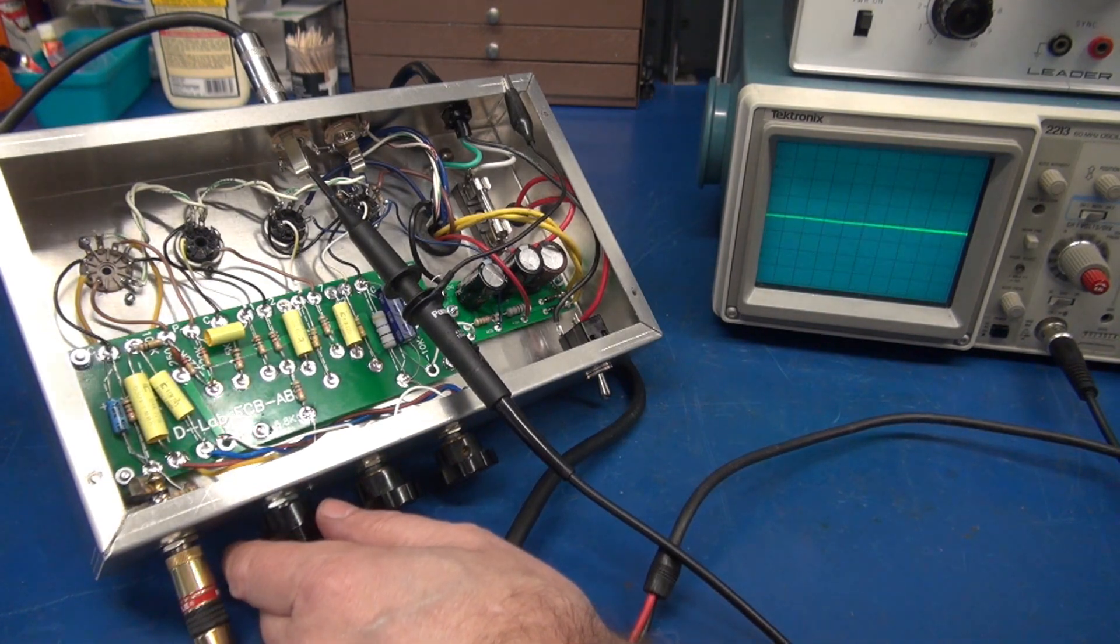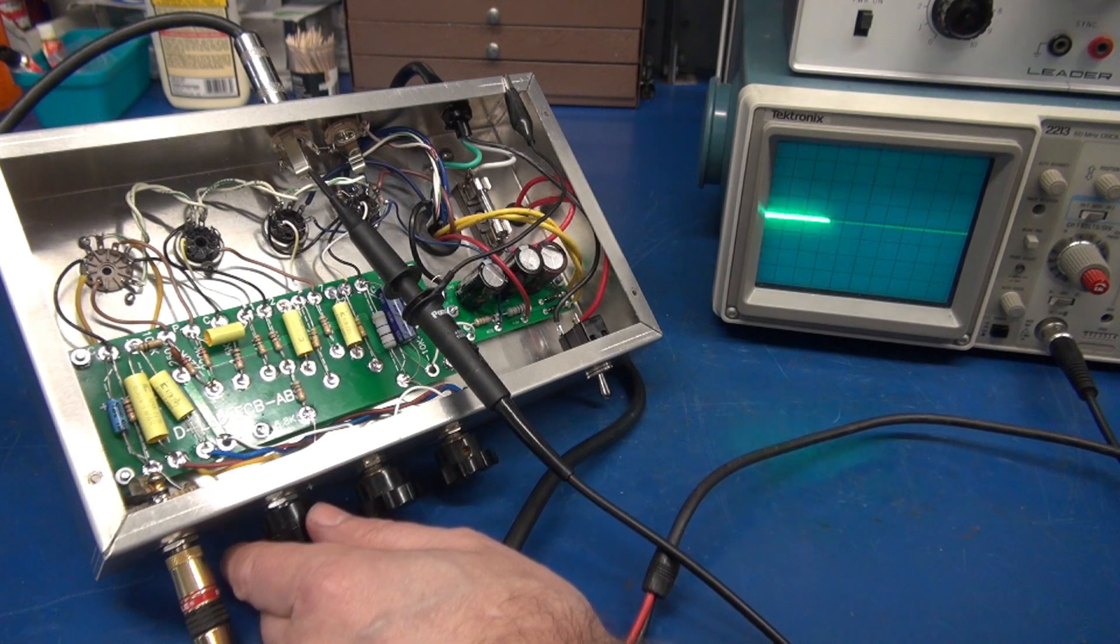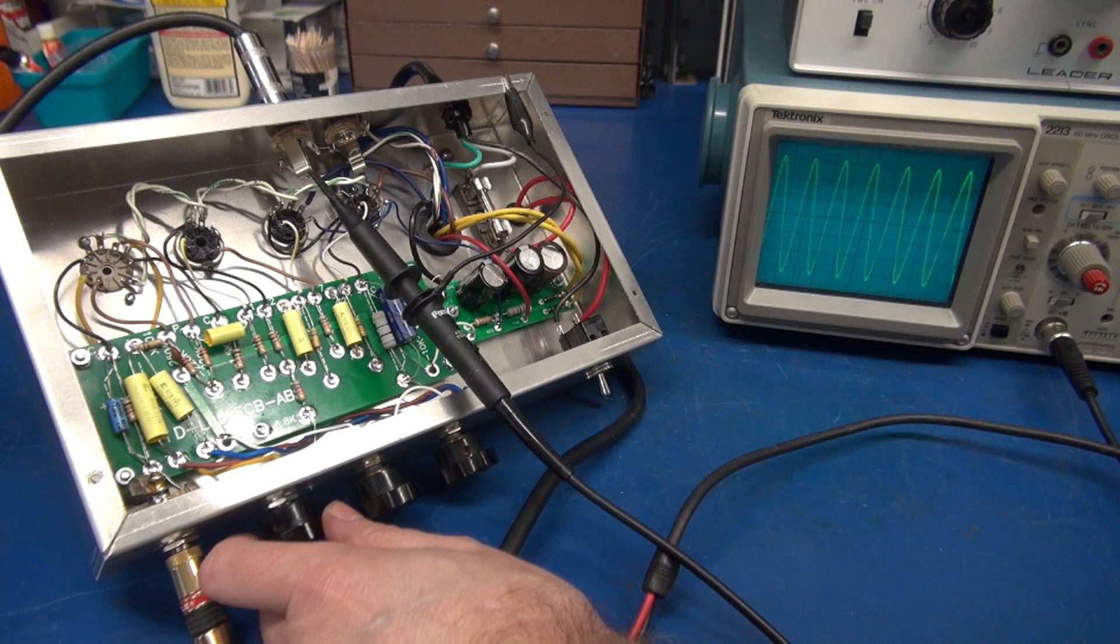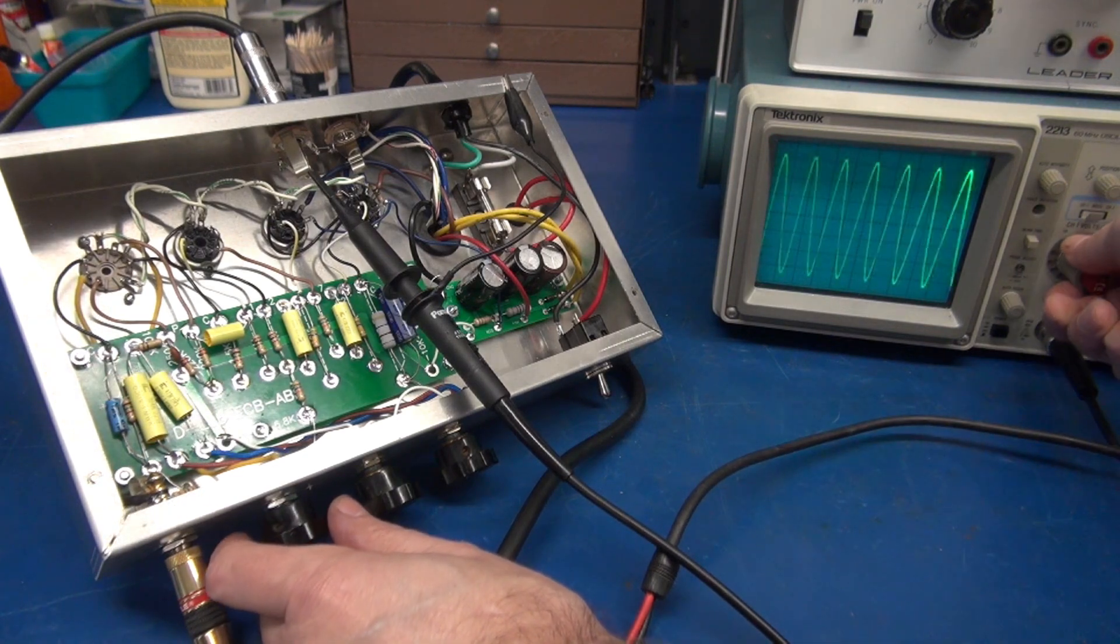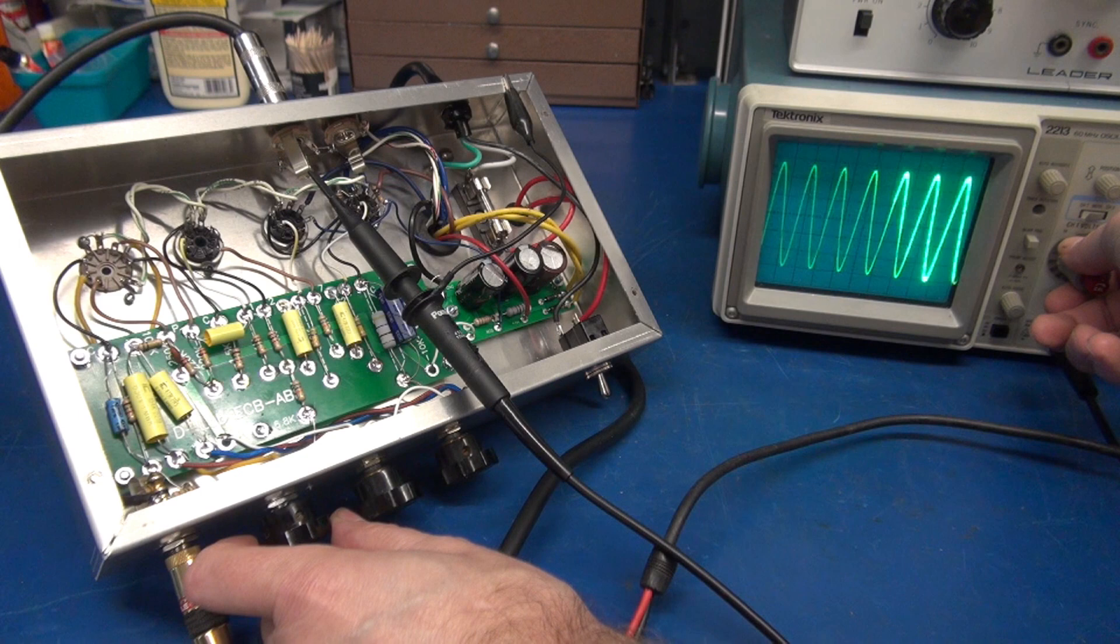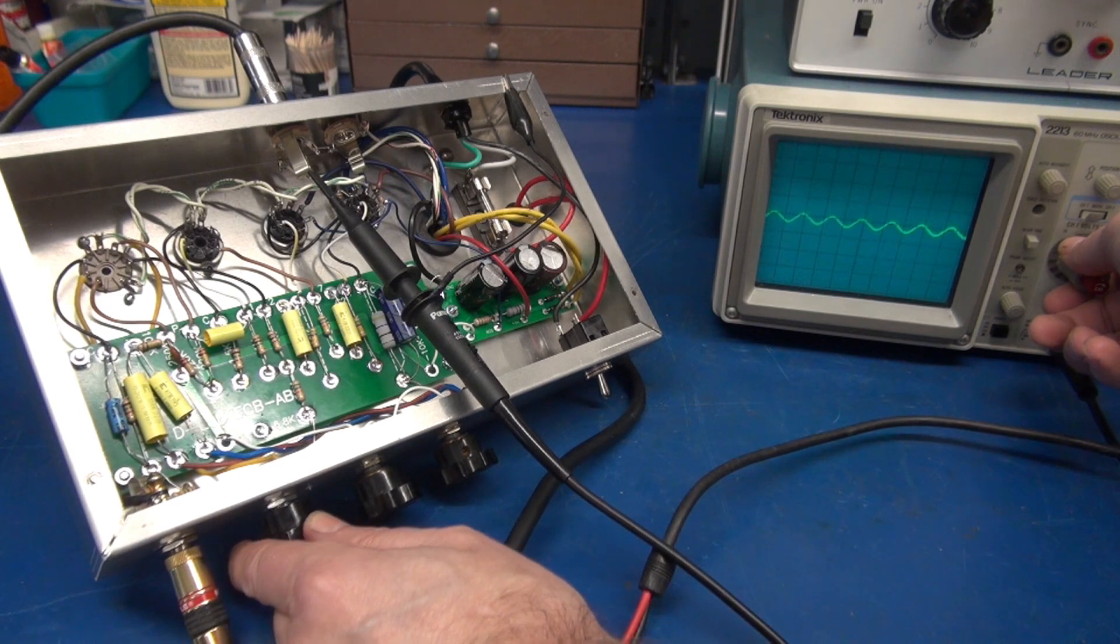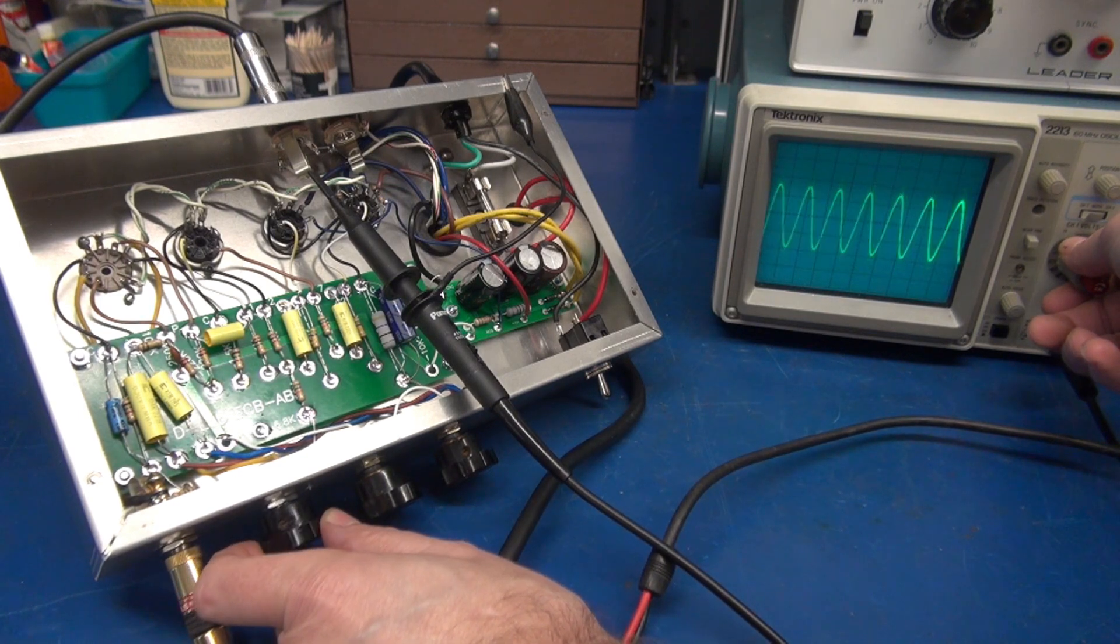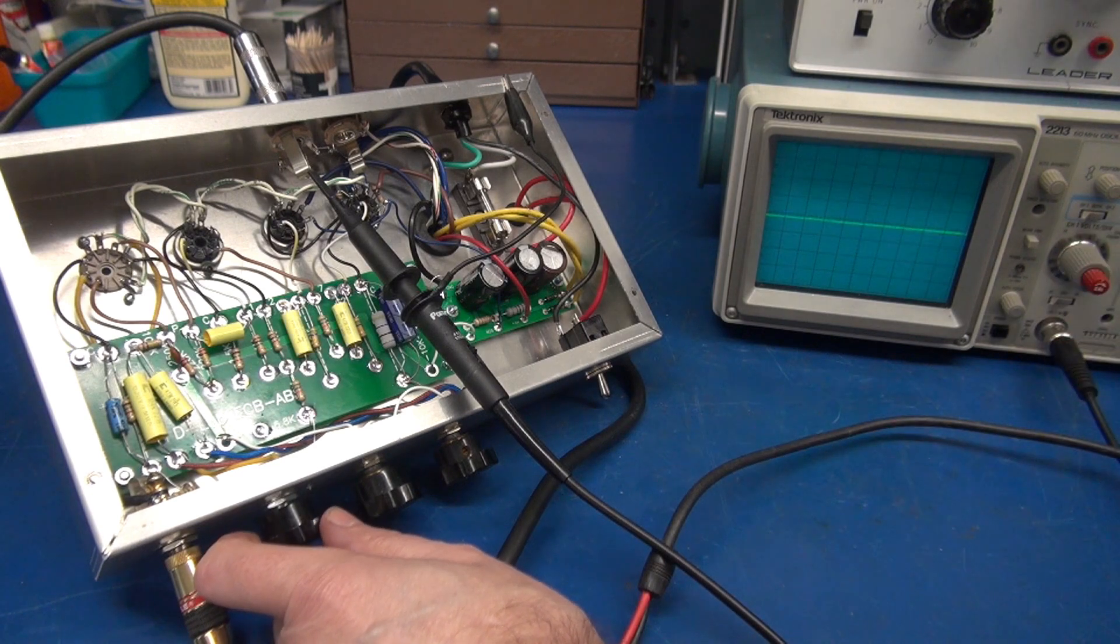All right, now I'm applying approximately a 700 Hertz sine wave. So take a look at the scope. She looks great. No crossover distortion. A perfect signal.